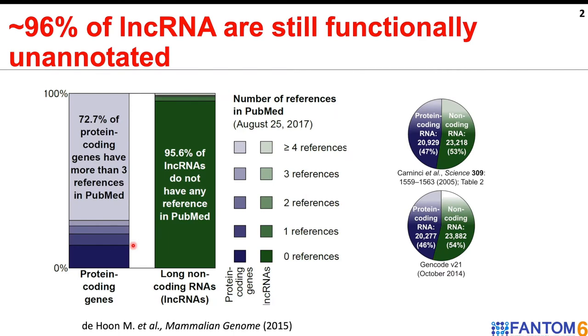Thousands of lncRNAs are known to be transcribed across different cell types. However, if we look into the literature, 96% of them are still functionally unannotated, demonstrating a major gap in the knowledge.